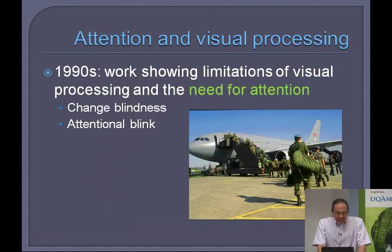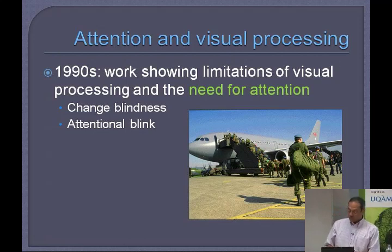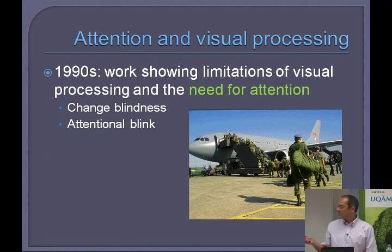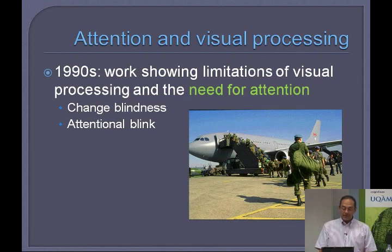This issue of understanding the factors determining awareness of visual stimuli has fascinated a lot of people. A lot of work in the 90s suggested that there were serious limitations to the processing of visual stimuli, with the combined result of these studies suggesting a great need for attention — things like change blindness and attentional blink, showing the need for attention for more in-depth processing.